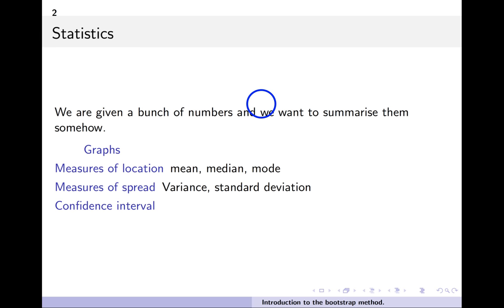Background: in statistics we're given a bunch of numbers and we want to summarize them somehow — using graphs, histograms, or various plots. Measures of location tell us the central value: the mean, median, or mode. Measures of spread include variance and standard deviation. We also want to test experimental data against theory and generate confidence intervals — that's the goal of descriptive statistics.